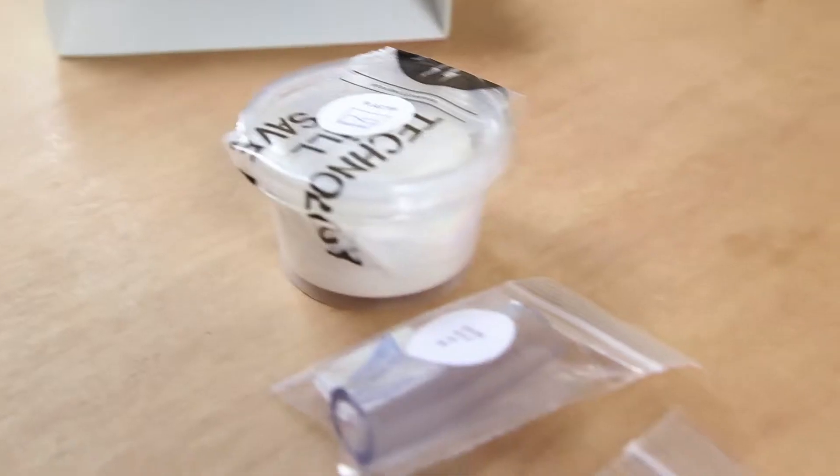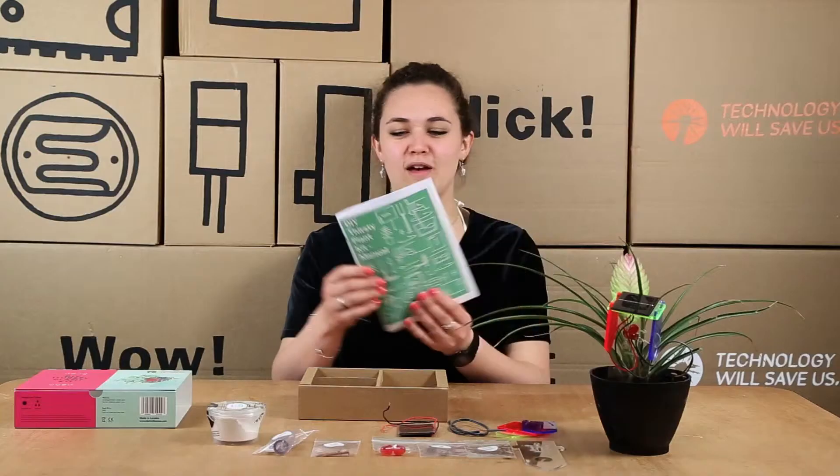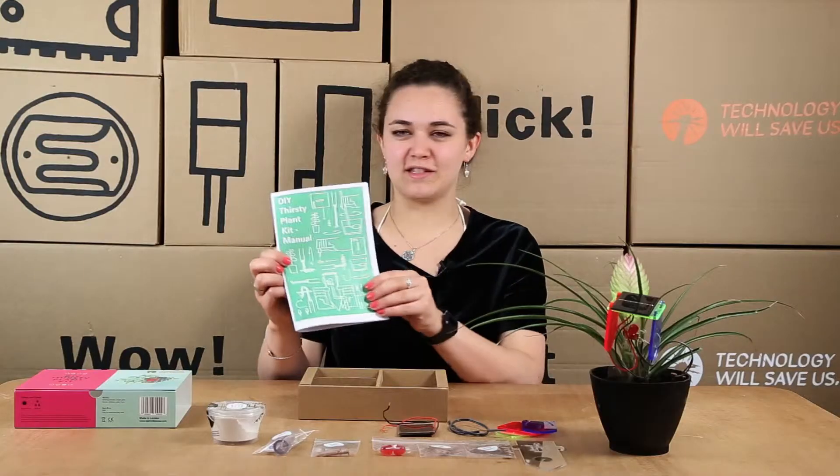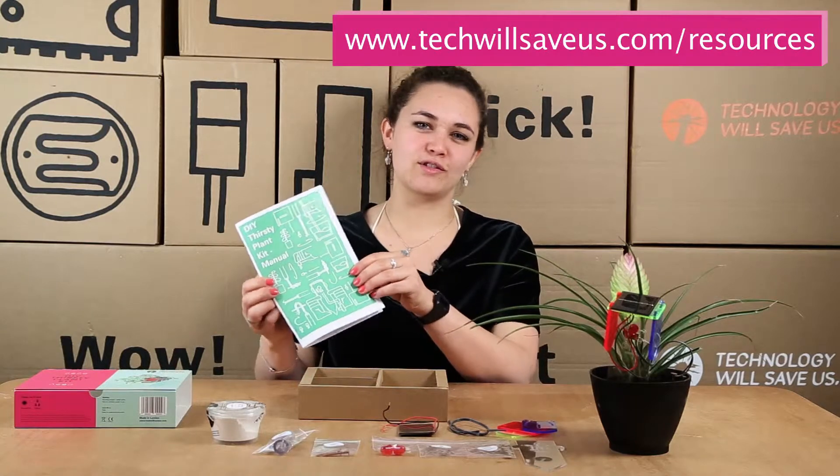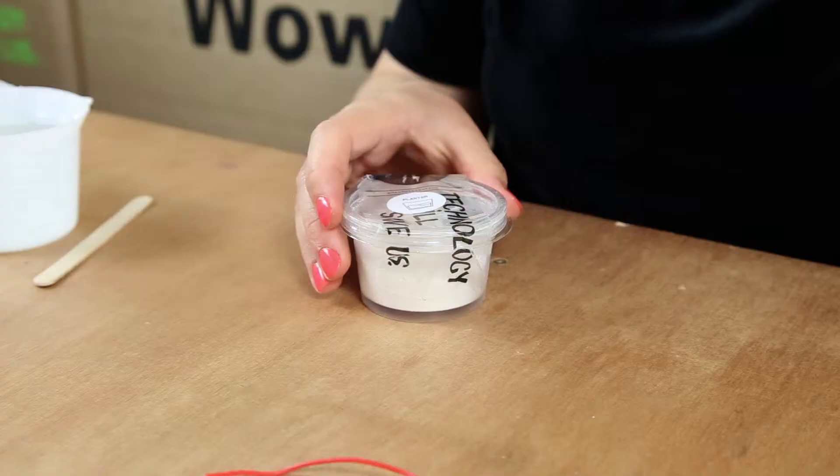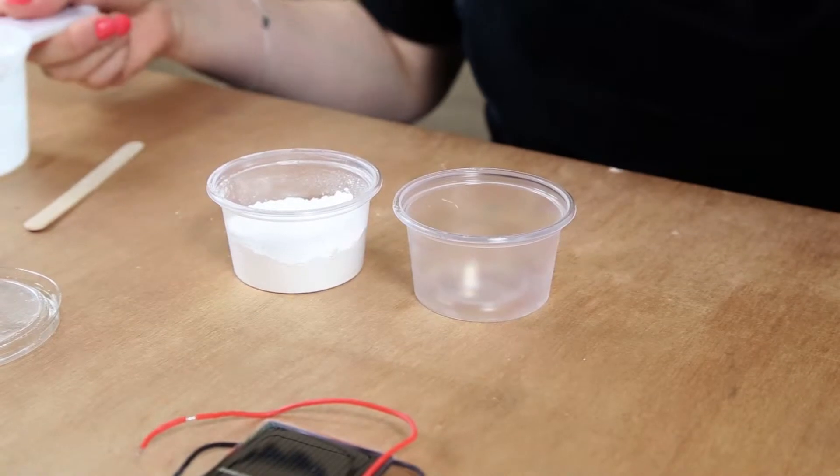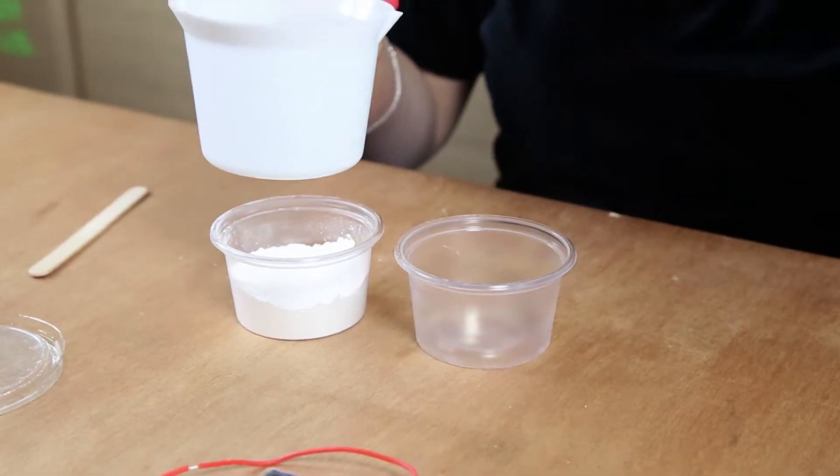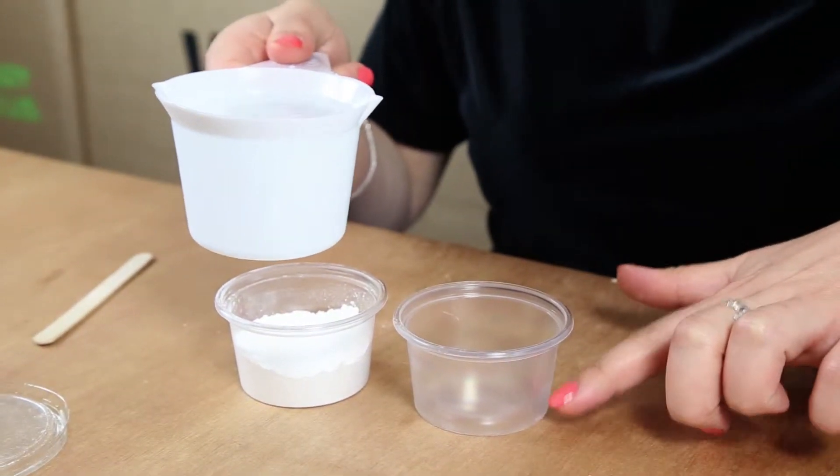So let's put it all together. We're going to follow our step-by-step guide, the Thirsty Plant Manual, and you can find this on the resources page of our website. So first we're going to take our plaster of Paris and add some water into it. So we just want to add about a fifth up of the container.